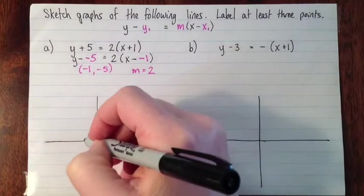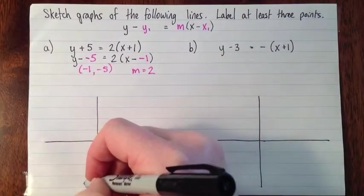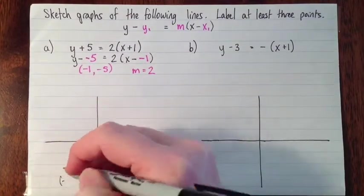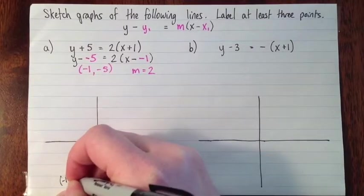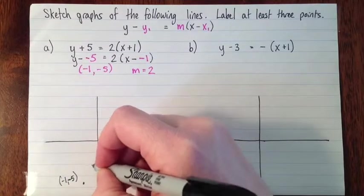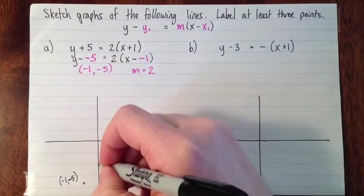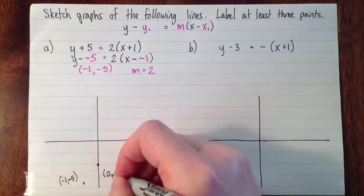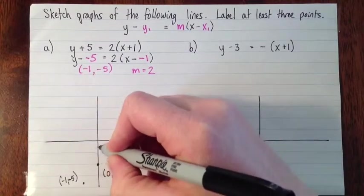Okay, so let's sketch that. The point (-1, -5). Negative 1, negative 5. And then from there we'll go up 1 and over 2. So that's the point (0, -3). And then we'll go over 1 and up 2 to get there.